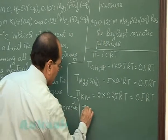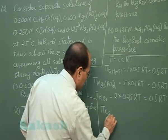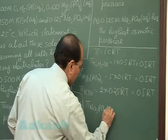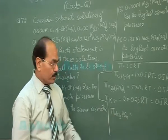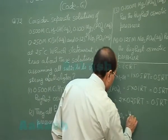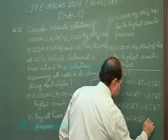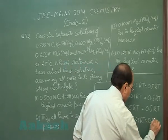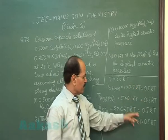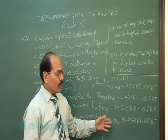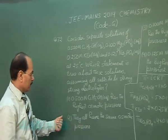For sodium phosphate solution, the van't Hoff factor is 4 and concentration is 0.125, so osmotic pressure = 4 × 0.125 × RT = 0.5RT. All four solutions have the same osmotic pressure expression of 0.5RT, so all will have the same osmotic pressure. Option 2 is correct.